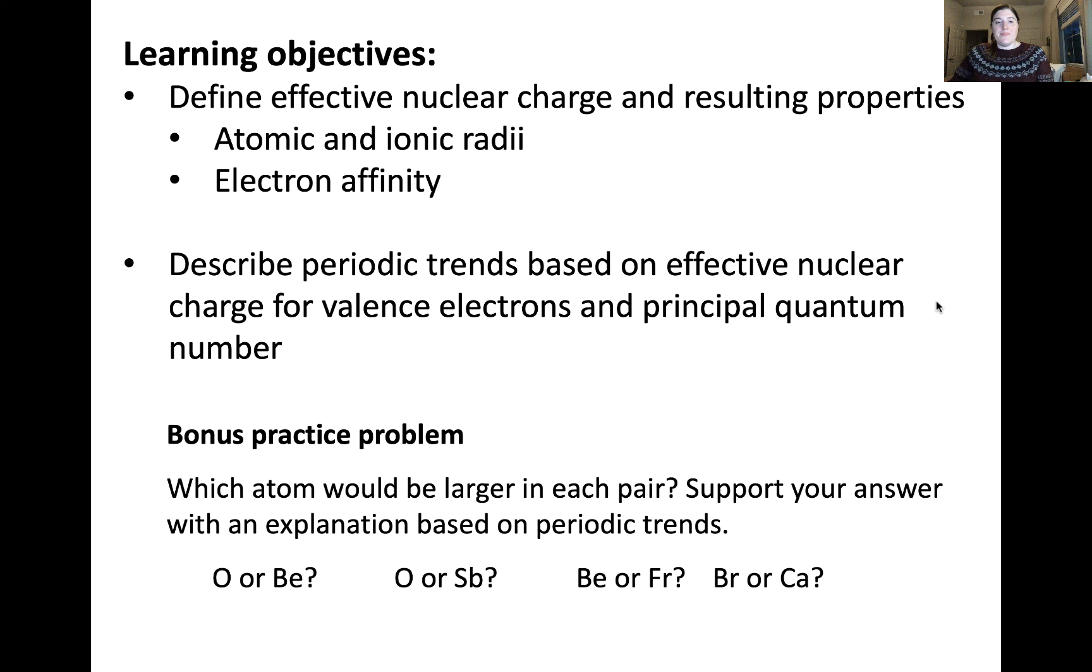So our learning objective here was to define the effective nuclear charge and the resulting periodic trends of atomic and ionic radii, as well as electron affinity. Not only have we discussed what these trends are, but also explained why they arise. Here's a bonus practice problem you can try related to classifying atomic radii. Be sure to not only choose the atom that's larger, but explain why it's larger based on the concepts we discussed in this video. Good luck and I'll see you in the next video.